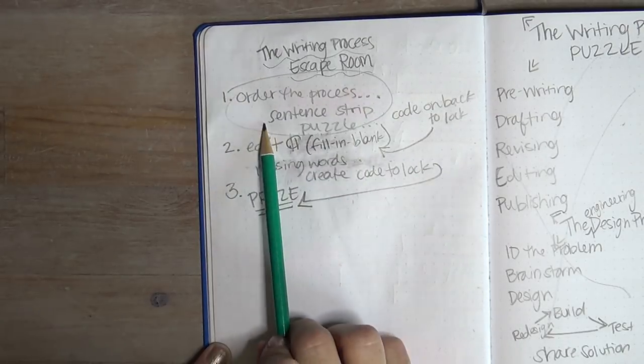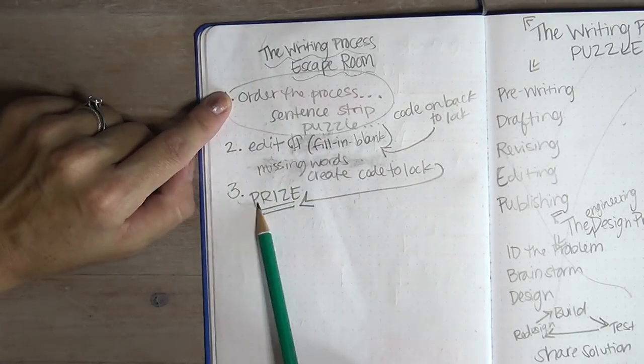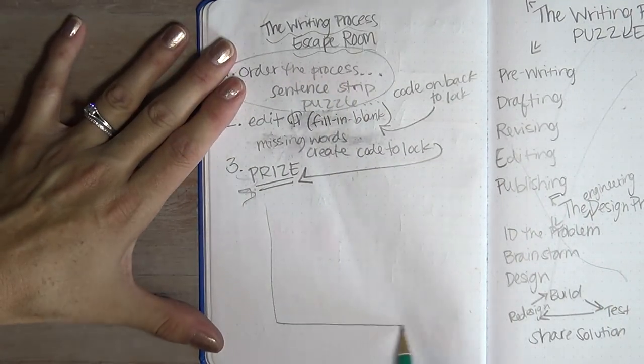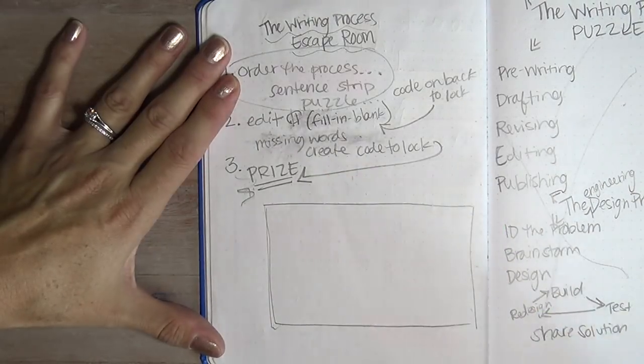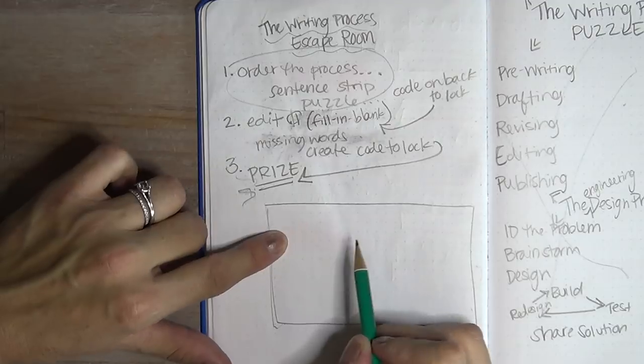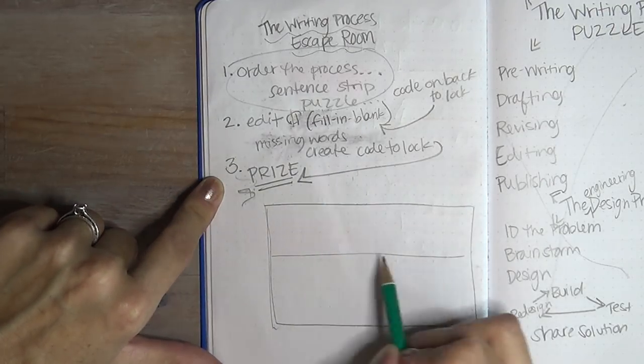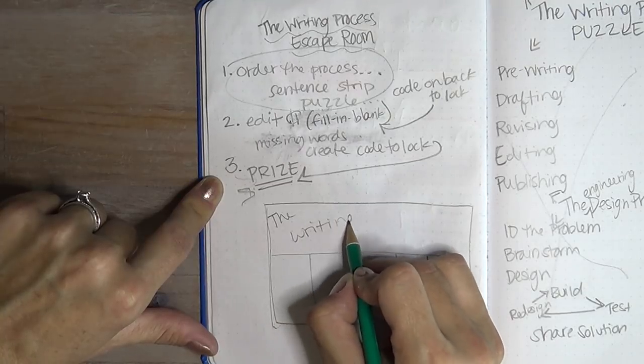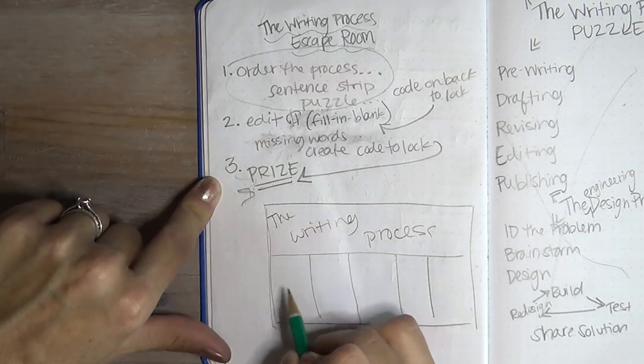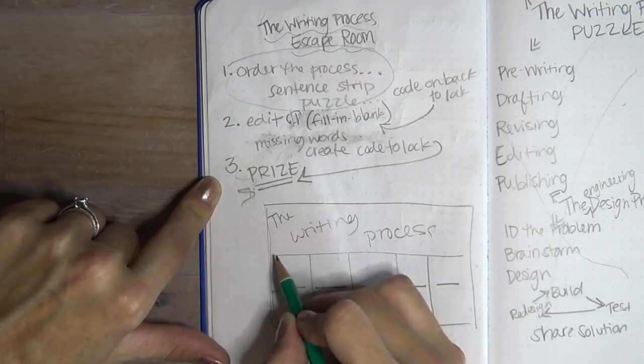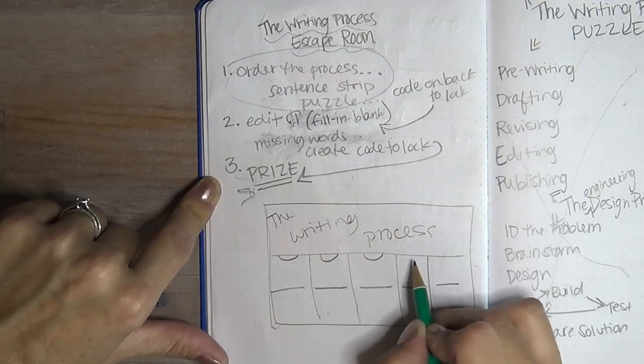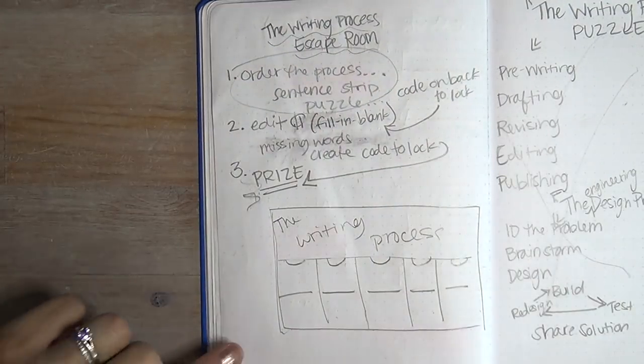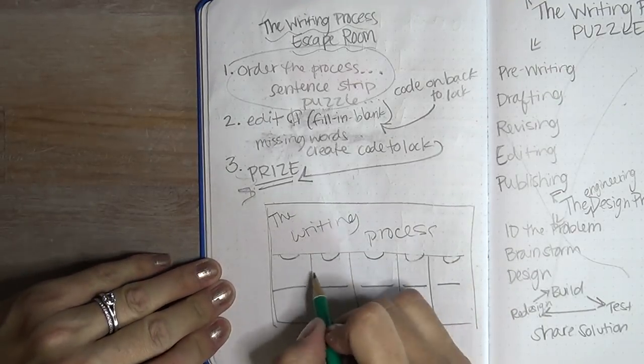I have already made the first puzzle in the writing process escape room. There's only two puzzles and then the very third stop is the prize. It's a piece of paper, an eight and a half by 11 landscape. I created this on PicMonkey. This is actually one of the freebies in my newsletter. It goes across like this and then the different parts. So here it says the writing process.